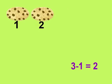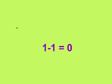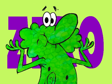And if we subtract one of these two cookies? Then we will only have one cookie left. And if we subtract the last cookie? Then we will have zero cookies. And if you keep eating the cookies, we'll have zero cookies.